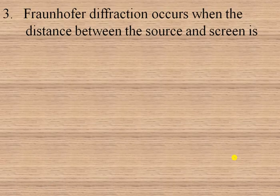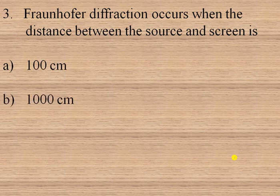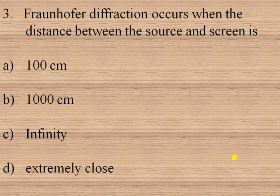The next question is: Fraunhofer diffraction occurs when the distance between the source and the screen is — 100 centimeter, 1000 centimeter, infinity, or extremely close? We know that in Fraunhofer diffraction the distance between the source and the screen is infinite, while for Fresnel diffraction the distance is finite. So option C is the right option.